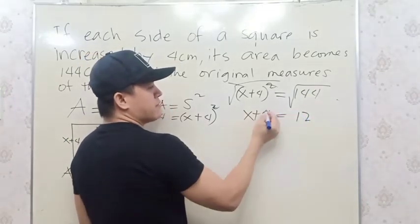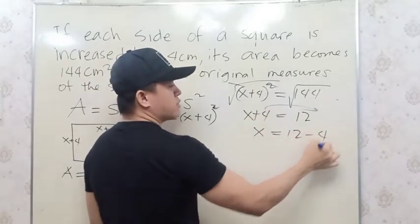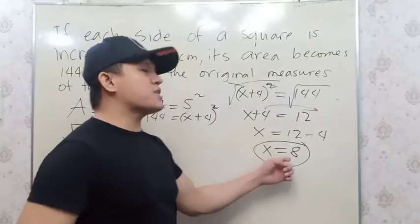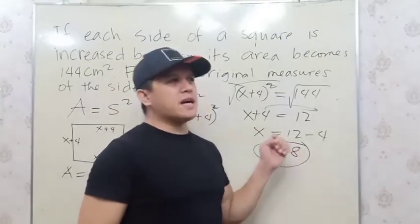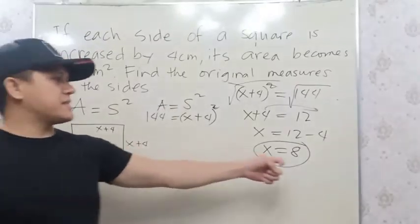Now solving this by transposing, we have X = 12 - 4, so X = 8. This is the original measure of the side of the original square, which is 8 centimeters.